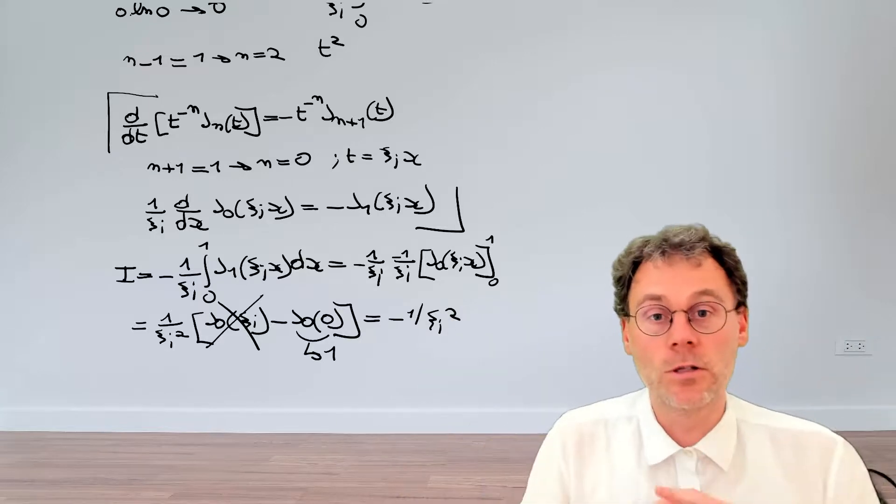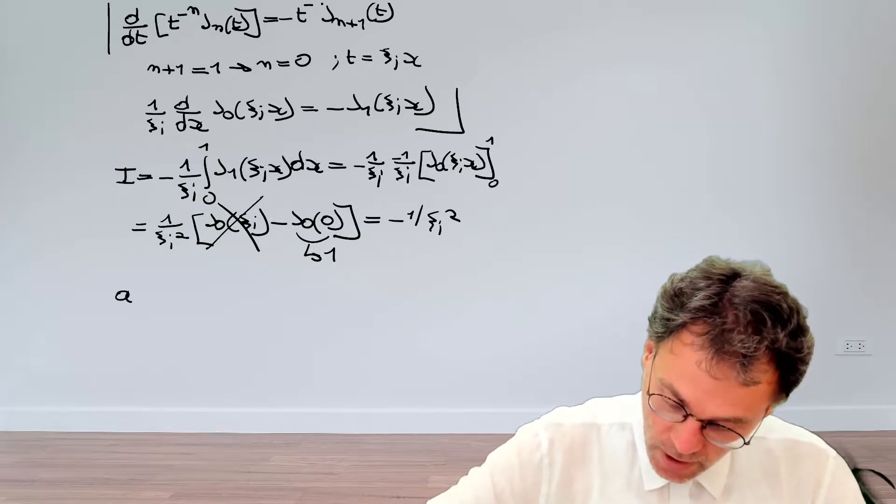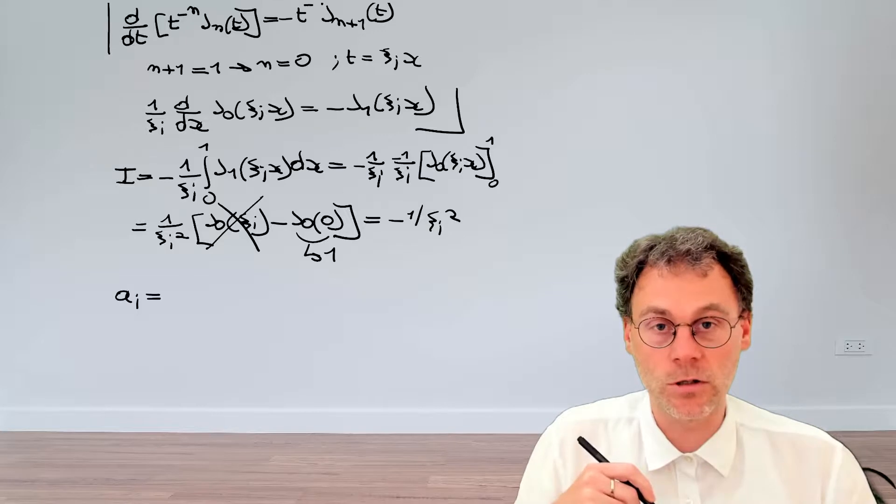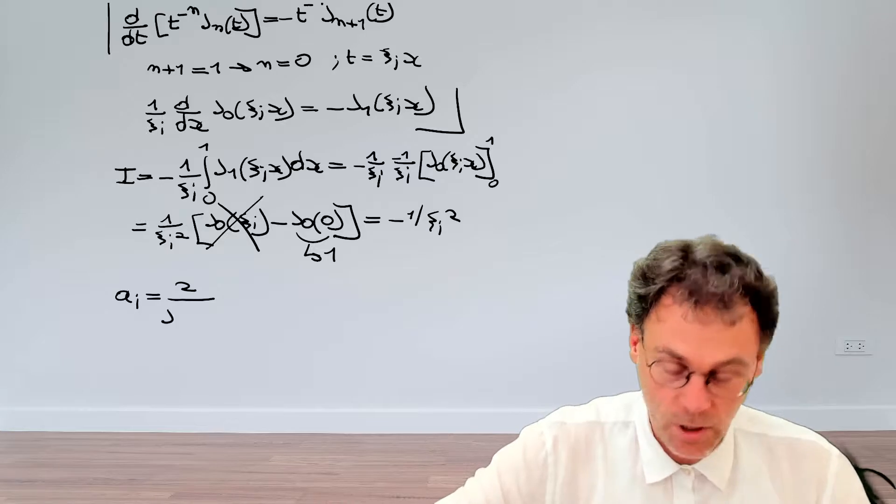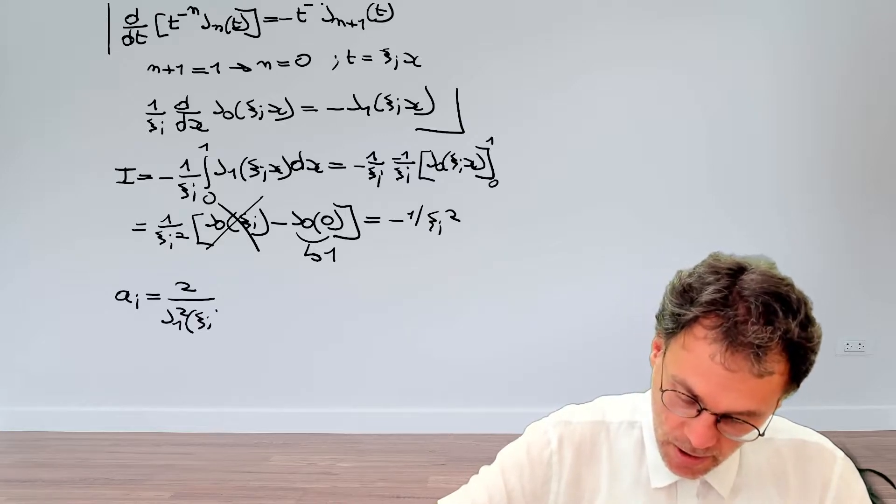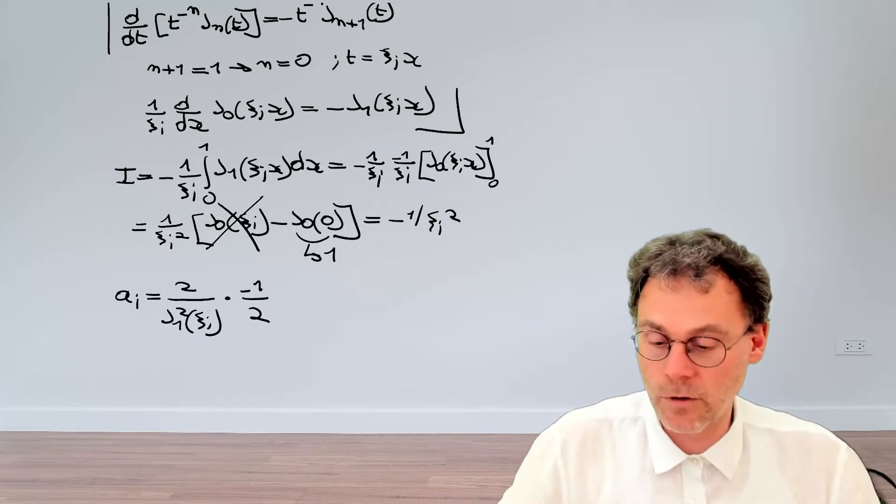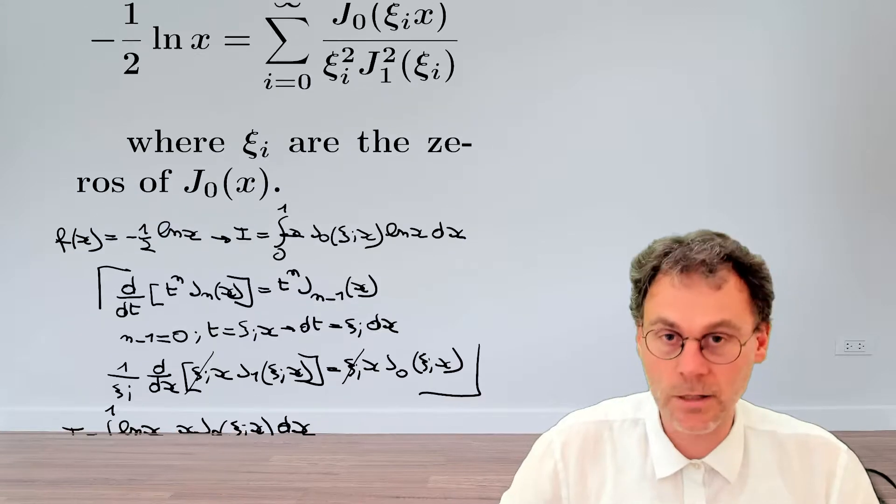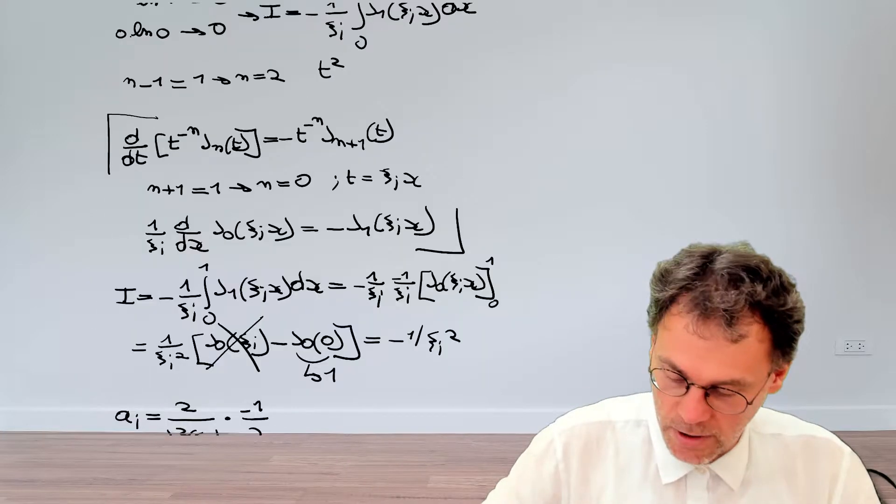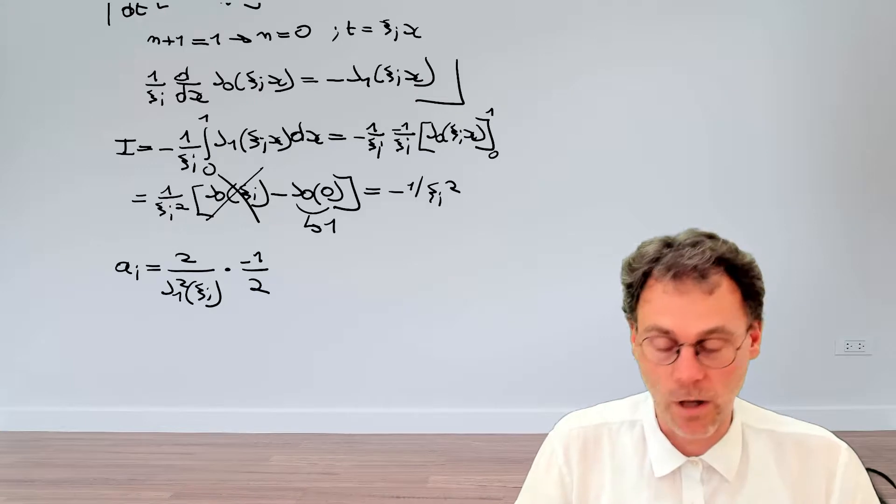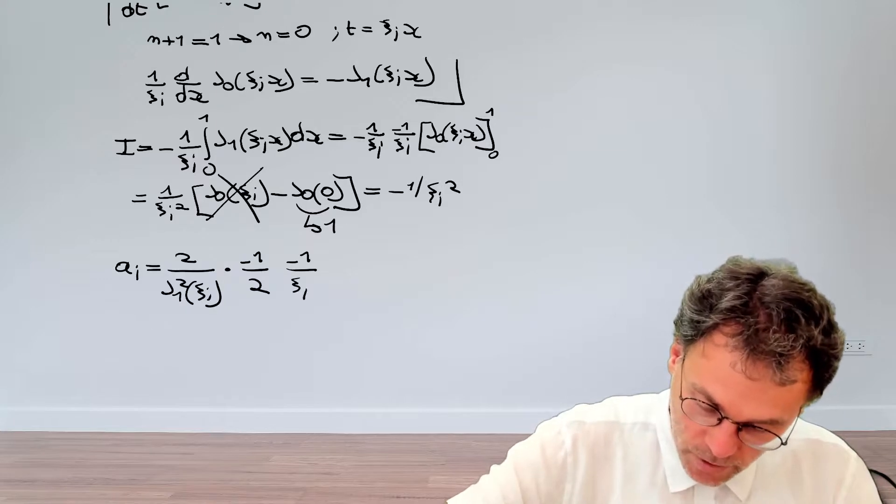And now we have all the ingredients to bring together in order to construct our Fourier Bessel series. Because we know from the textbook that the formula for the expansion coefficients first consists of a factor which is just a normalization coefficient. So that's 2j1 squared psi i. Then we should not forget this factor minus 1 half that we omitted from the very beginning here. So if we scroll back to our exercise definition, there's a factor minus 1 half here. So let's bring that one back now. That's this minus 1 half.